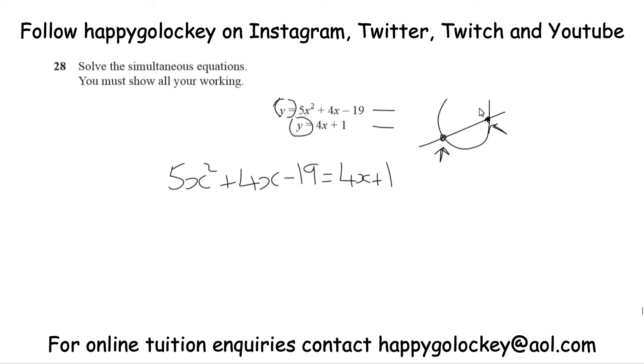So let's do a bit of rearranging after that. Let's keep the 5x squared over here. We've got 4x over this side, we're going to take 4x from the other side, leaving us with no x's at all. We've got minus 19 on this side, so that's cancelled out. We've got minus 19 on this side, we've got plus 1 over there, so once we take away that 1, that'll make 5x squared minus 20 equals 0.